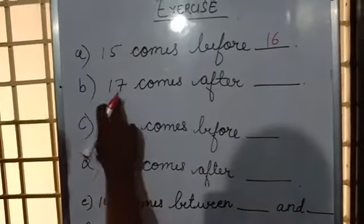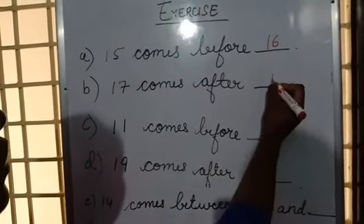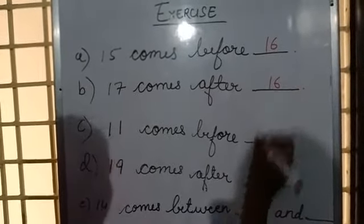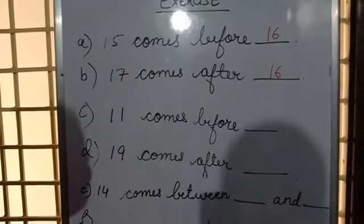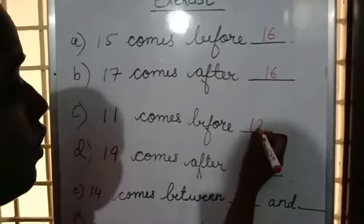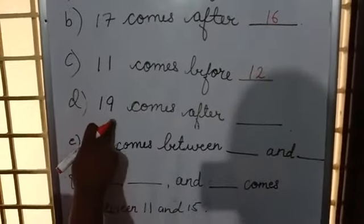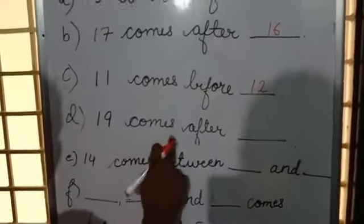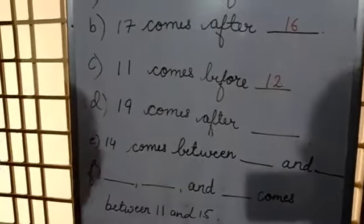Then, second one, number B: 17 comes after. 17 comes after 16. Then, number C: 11 comes before. 11 comes before 12. Next, number D: 19 comes after. 19 comes after 18.